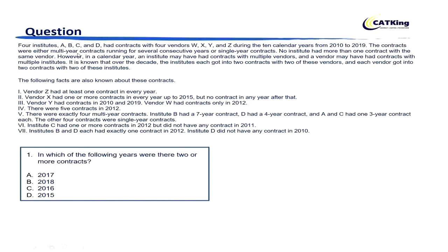The question says 4 institutes A, B, C and D had contracts with 4 vendors W, X, Y and Z during the 10 calendar years from 2010 to 2019. The contracts were either multi-year contracts running for several consecutive years or single-year contracts. No institute had more than one contract with the same vendor — so if A has multiple contracts, they could be with W and X, W and Y, W and Z, X and Y, X and Z, or Y and Z, but it cannot have 2 contracts with the same vendor.